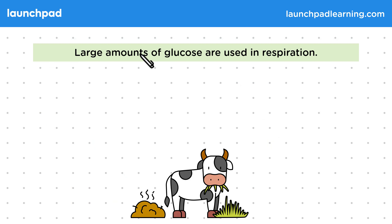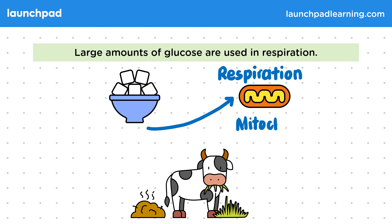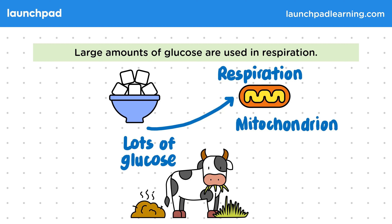Large amounts of glucose are used in respiration. Respiration occurs in the mitochondria of cells and uses up a lot of glucose, resulting in biomass loss between trophic levels.